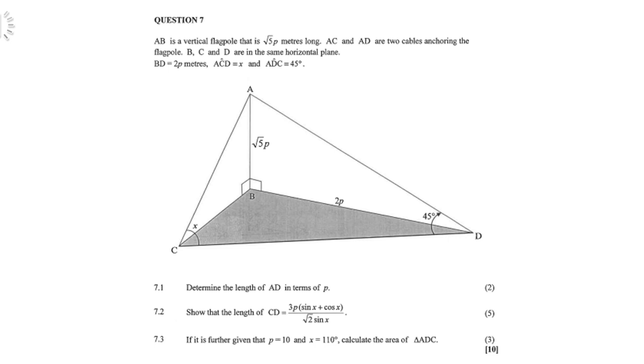Now, BD is 2p meters tall. Angle ACD is x, and angle ADC is 45 degrees. You must determine the length of AD in terms of p. Show that the length of CD is 3p times sin x plus cos x, divided by square root of 2 sin x. In 7.3, it is further given that p is 10, x is 110. Calculate the area of triangle ADC.